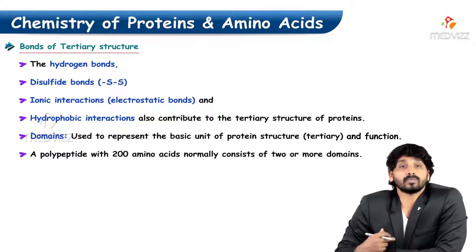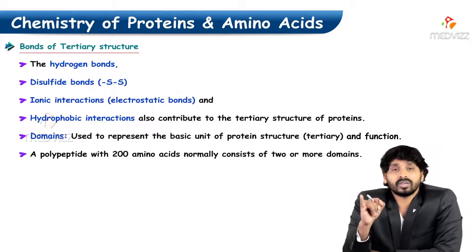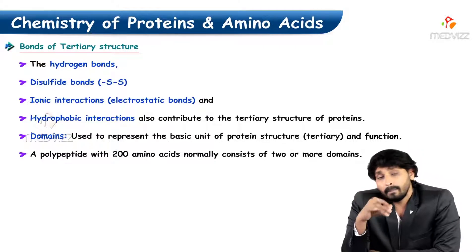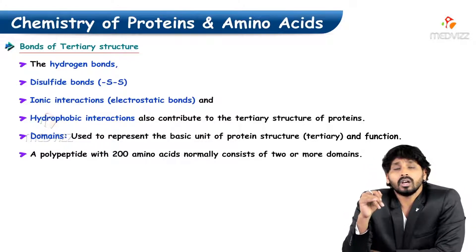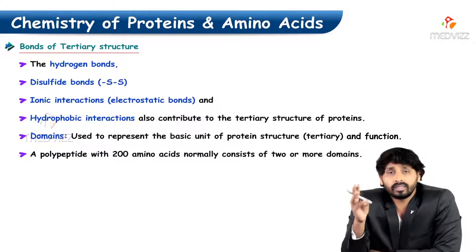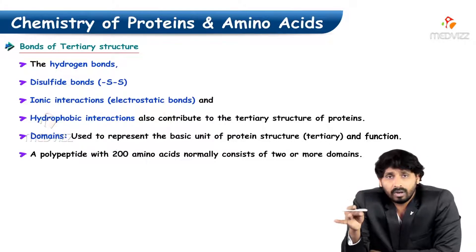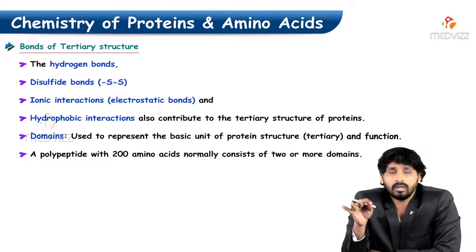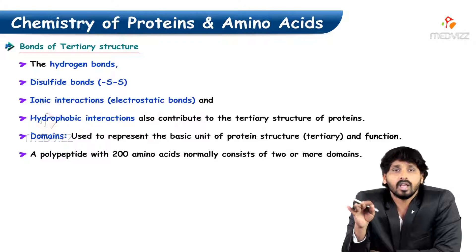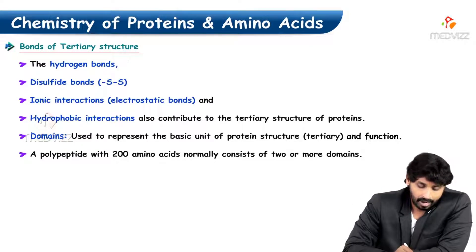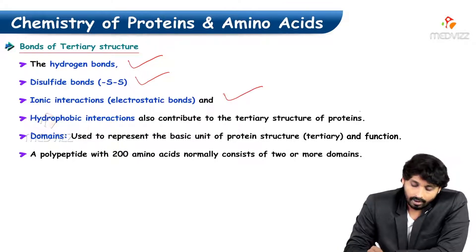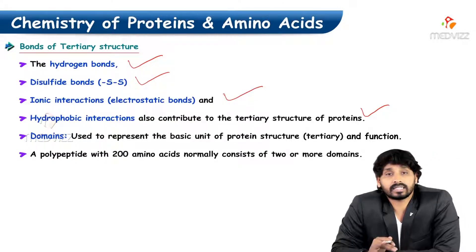What are the bonds responsible for tertiary structure? In primary structure, we have only peptide bonds and somewhat disulfide bonds. Coming to secondary structure, along with peptide bonds, we have hydrogen bonds, covalent bonds, and ionic bonds, based on the composition of amino acids present. In tertiary structure, we have hydrogen bonds, disulfide bonds, ionic interactions, and hydrophobic interactions — all these types of bonds exist.